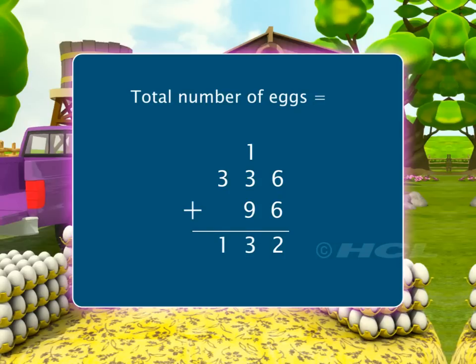So, we write 3 in the answer and carry over 1 to the hundreds column. Adding the carry over 1 to 3 in the hundreds column, we get 4.